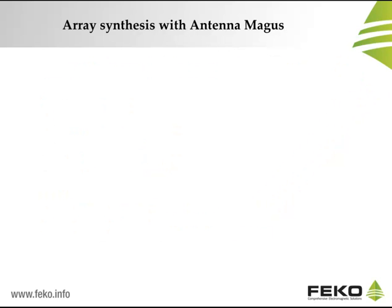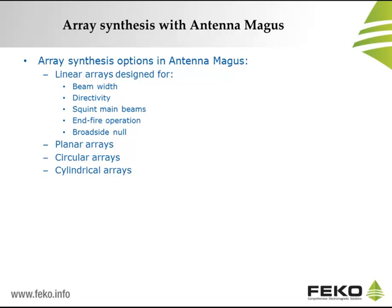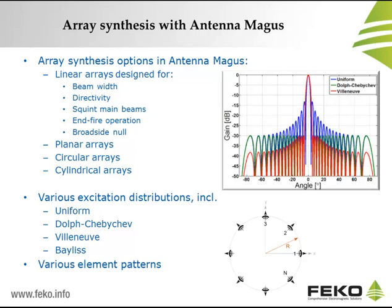Before we start our demonstration, it is instructive to understand what functionality is provided by the Antenna Magus Array Synthesis module. Antenna Magus can be used to synthesize various types of array, including linear, planar, circular, and cylindrical arrays. Each array design can be customized in various ways. For example, linear arrays can be designed by specifying beam width, directivity, direction of main beam squint, and for end-fire operation or with a broadside null. Various array excitation distributions can be chosen, including Uniform, Dolph-Chebyshev, Villeneuve, and Baylis. Array patterns can be combined with various radiating elements to estimate performance of the final array.